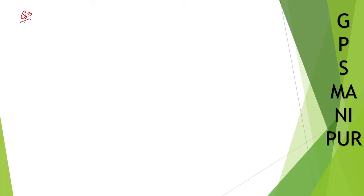Now we are doing exercise 4.1, question number 3, problem number 4. We have the equation 5x plus 2y equal to 0. Solution: